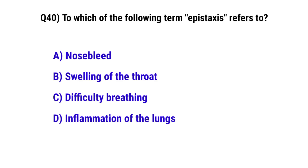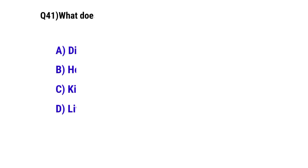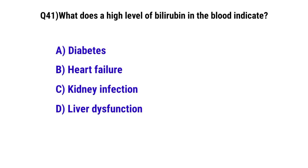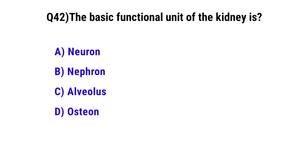Question No. 40: To which of the following does the term epistaxis refer? The correct option is A: nosebleed. Question No. 41: What does a high level of bilirubin in the blood indicate? The correct option is D: liver dysfunction.